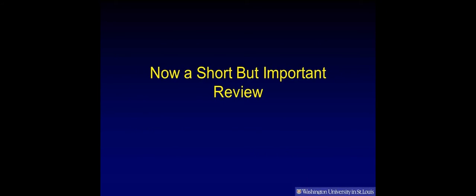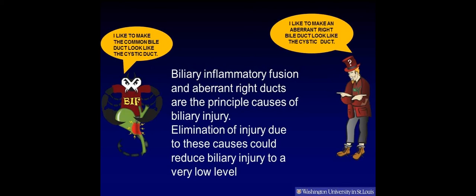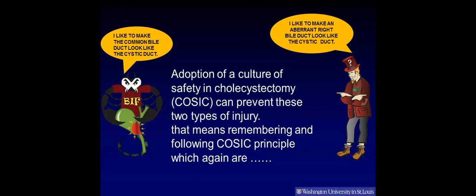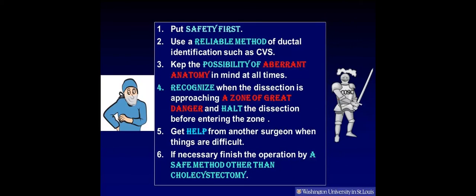For a short but important review: biliary inflammatory fusion and aberrant right ducts are the principal causes of biliary injury. Elimination of injury due to these causes should reduce biliary injury to a very low level. Adoption of a culture of safety in cholecystectomy — COSSACK — can prevent these two types of injuries. That means putting safety first, using a reliable method of ductal identification, keeping the possibility of aberrant anatomy in mind at all times, recognizing when the dissection is approaching a zone of great danger and halting it before entering that zone, getting help from another surgeon when things are difficult, and if necessary, finishing the operation by a safe method other than cholecystectomy.